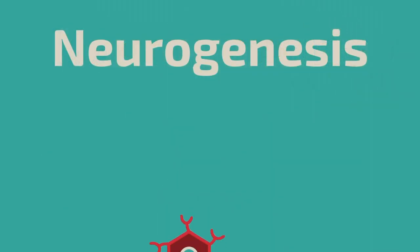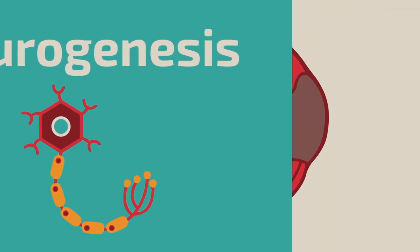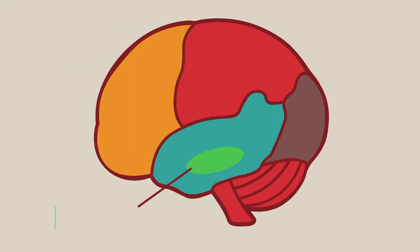Another example of structural plasticity is the process of neurogenesis, which is the formation of new neurons in the brain. One example of neurogenesis is the formation of new neurons in the hippocampus, a region of the brain involved in learning and memory.